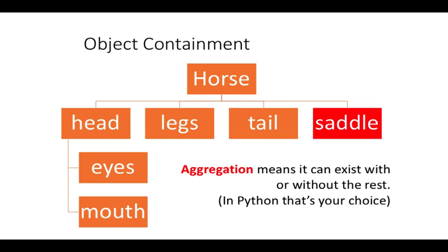Object containment basically means it is something within. So you've got horse, and within your horse you've got head, legs, tail, eyes, mouth. If you're drawing your 3D horse, these are the kind of things that you would have in it. Now there's another concept called aggregation, and that means it can exist with or without the rest. So the saddle can be on the horse, it doesn't have to be on the horse. It's your choice whether it exists with or without the horse. And in Python, that is literally your choice.